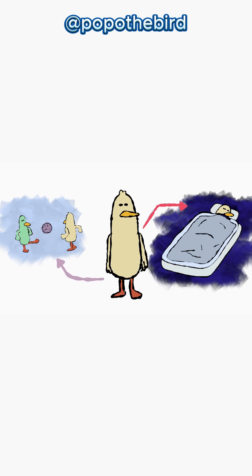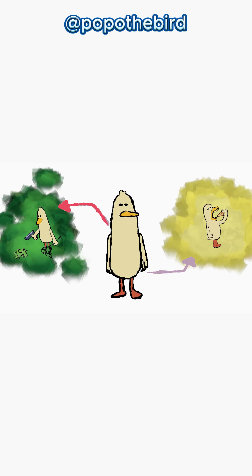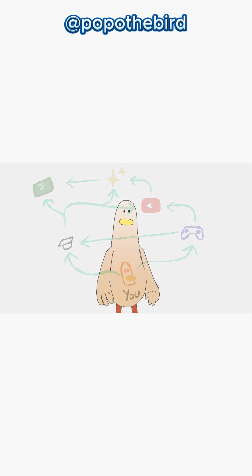Everything duck does has a cost like this. Choose a nap? Cost is no play with friends. Choose to chase a frog? Cost is no yummy bug. Always give up something else. Cannot do everything. So remember, duck friends: every choice, big or small, means you lose the chance for the next best thing.